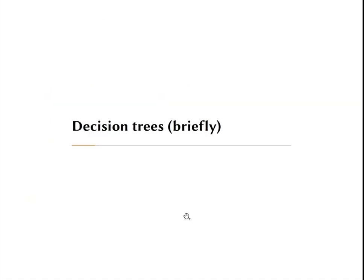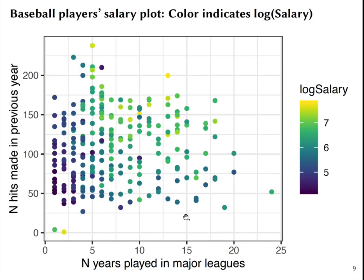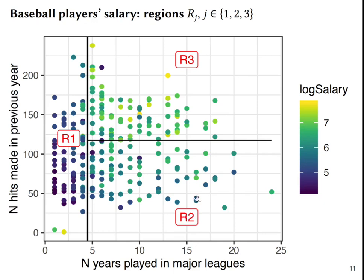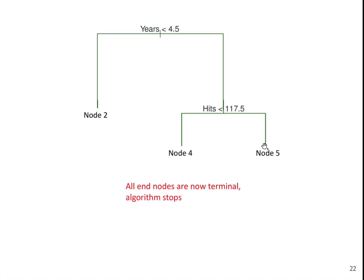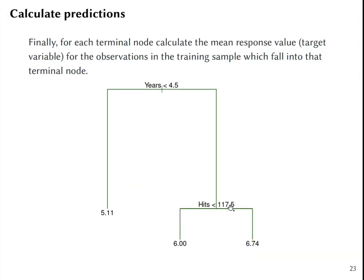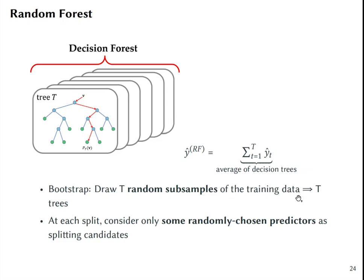Let me briefly recap random forests, starting with decision trees. A decision tree is a model that partitions the predictor space in a way that minimizes residual sum of squares within each terminal node, using recursive binary splitting. The final step is to estimate predictions in each node by simply taking the average of the target variable in each final node. Random forests randomly draw subsamples of the training data, and for each subsample at each split they consider only some randomly chosen predictors. The final prediction is an average across all the different predictions by different trees.